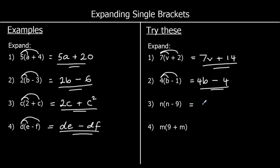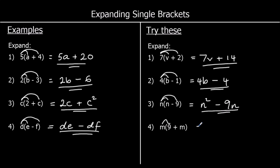Number three: n times n is n squared. And we've got a positive times a negative, and n times 9 is 9n. So n² minus 9n. And the fourth one: m times 9 is 9m, and m times m is m squared.